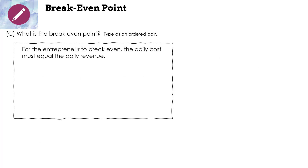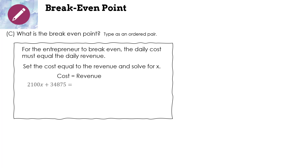What is the break even point? For the entrepreneur to break even, the daily costs must equal the daily revenue. Set the cost equal to the revenue and solve for x: 2100x + 34,875 = 2875x. We subtract 2100x from both sides, then divide both sides by 775. This gives us x = 45. X is the number of sold-out performances we need so that we have a break even point — where cost equals revenue.